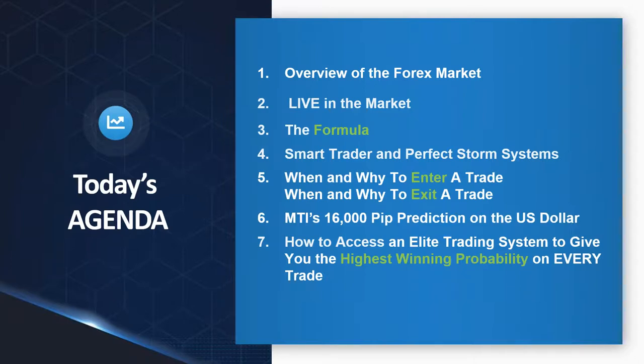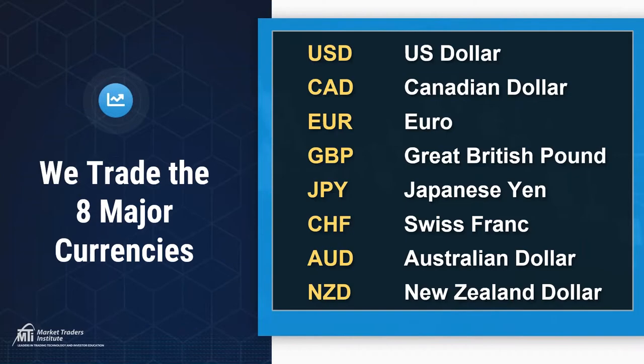It's a little different than stocks because stock prices move dollars and cents at a time. In currency, it moves at the last two decimal places — pips at a time. Pips stands for price interest point. It's not dollars, it's pips. The more pips we make, the more money we're going to make. These pips are going to become your friend.